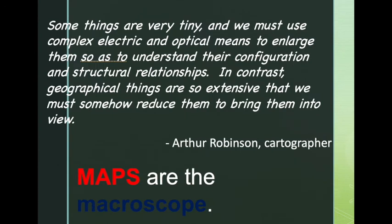Some things are very tiny, and we must use complex electric and optical means to enlarge them so as to understand their configuration and structural relationships. In contrast, geographical things are so extensive that we must somehow reduce them to bring them into view, says Arthur Robinson, a very famous cartographer. So what we understand is that maps are the macroscope.